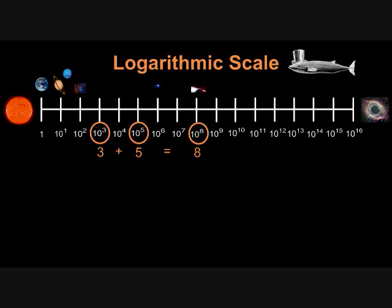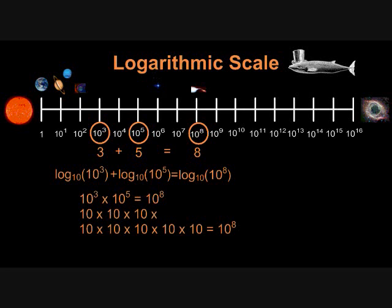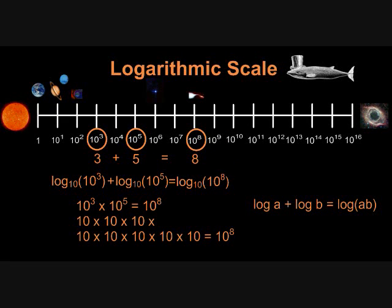Here's another example: three plus five equals eight, or the third position plus the fifth position equals the eighth position. In logarithms, the logarithm of ten cubed plus the logarithm of ten to the fifth equals the logarithm of ten to the eighth. Notice that the numbers in the logarithms — ten cubed and ten to the fifth — multiply to give ten to the eighth power. So to recap: adding the positions of the numbers is the same thing as multiplying those numbers together. The third position plus the fifth position is the eighth position; ten cubed times ten to the fifth is ten to the eighth, since the positions on the logarithmic scale correspond to taking the logarithms of those numbers.